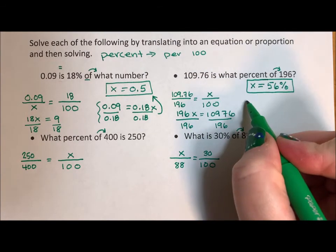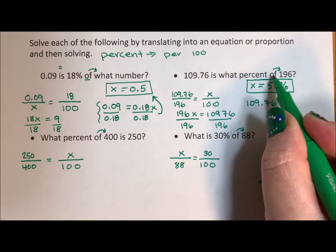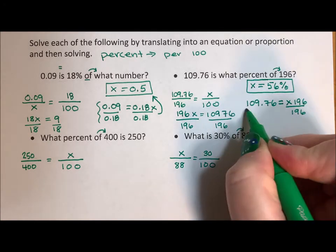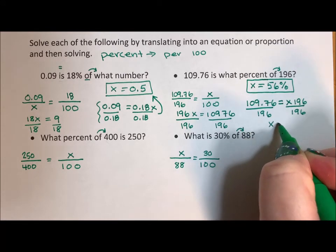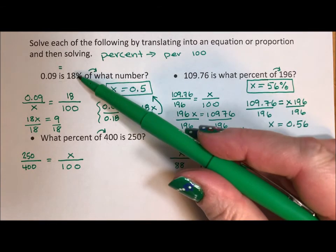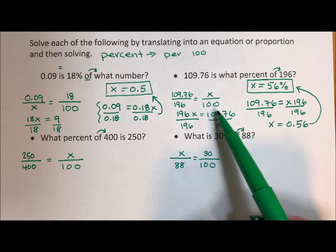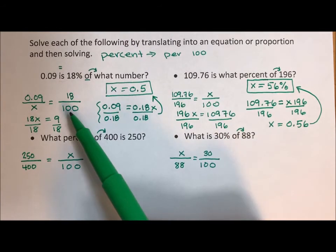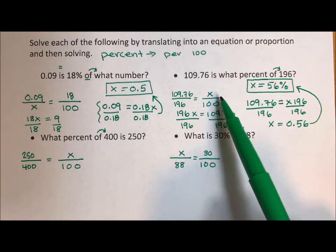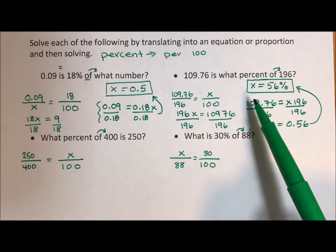Translation: 109.76 is what percent, the word of means multiply, of 196. I divide both sides by 196, and I get that X is 0.56. In this case, I have that decimal, kind of like I turned my percent into a decimal over here. And I have to then multiply by 100 to get it into a percent. The 100 is part of the problem when you do your proportion, which is why I didn't need to divide by 100 to get 0.18. And I don't need to multiply by 100 to get 56%. It's already part of the proportion.